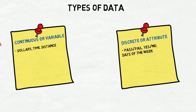Discrete data is data that can only take on a unique set of values, such as counting errors, pass-fail, yes-no, or days of the week.